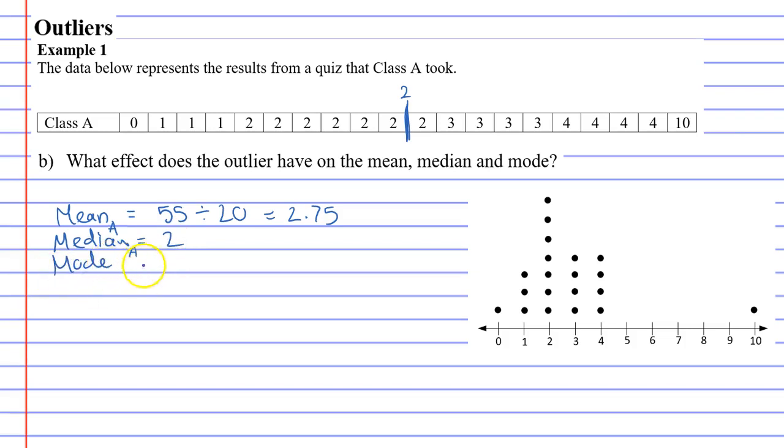And then last of all, the mode. Mode's the most common number, which is 2 as well. Okay, good.